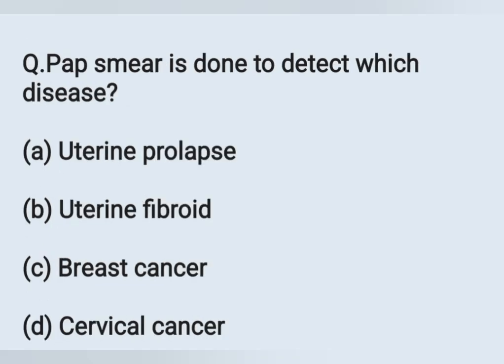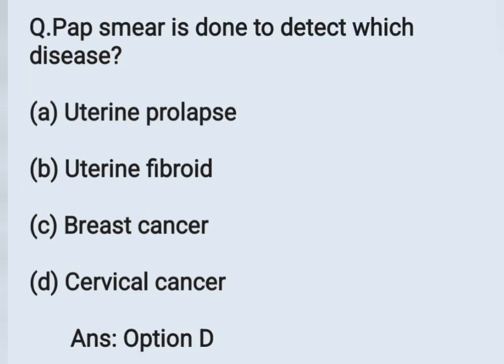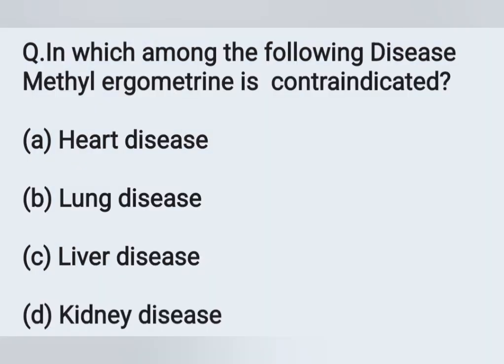The next question: Pap smear is done to detect which disease? Option A: uterine prolapse, Option B: uterine fibroid, Option C: breast cancer, Option D: cervical cancer. The correct answer is Option D — cervical cancer. Pap smear is used to detect cervical cancer.